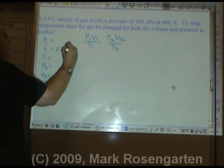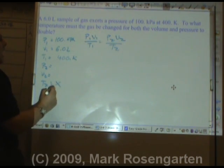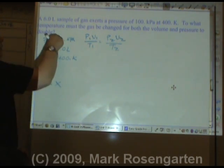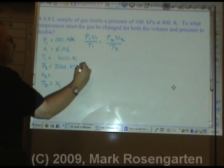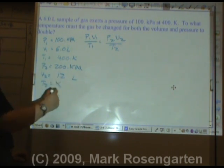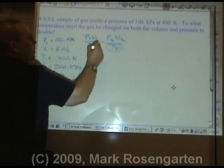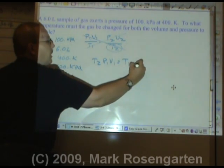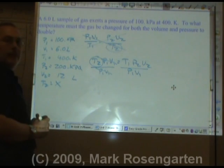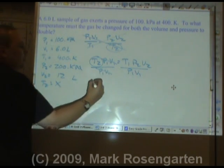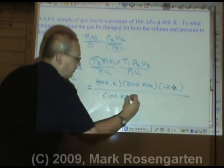One more problem: a 6.0 liter sample of gas exerts a pressure of 100 kilopascals at 400 Kelvin. To what temperature must the gas be changed for both the volume and pressure to double? Double 100 gives 200 kilopascals, double 6 gives 12 liters — two sig figs. We're solving for T2, which is in the denominator, so cross-multiply: T2·P1·V1 = T1·P2·V2, then divide both sides by P1·V1.